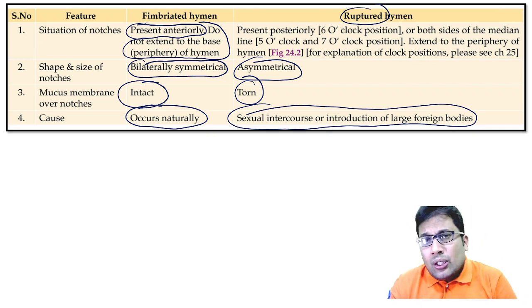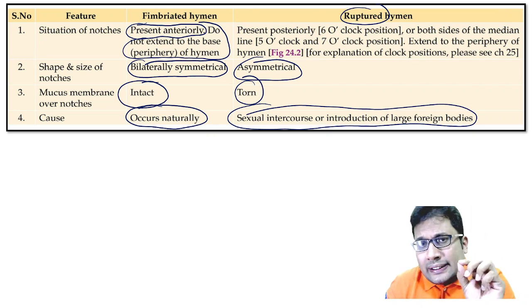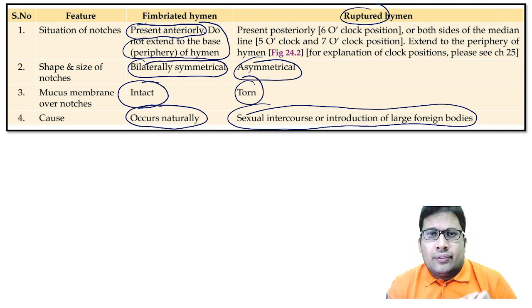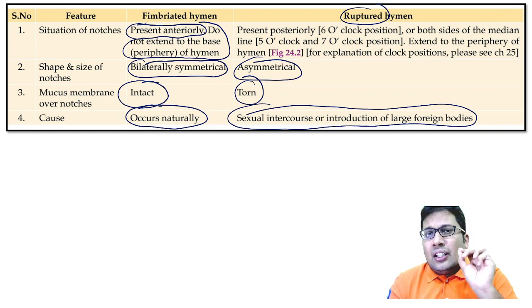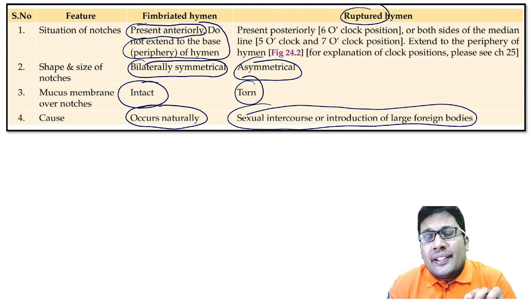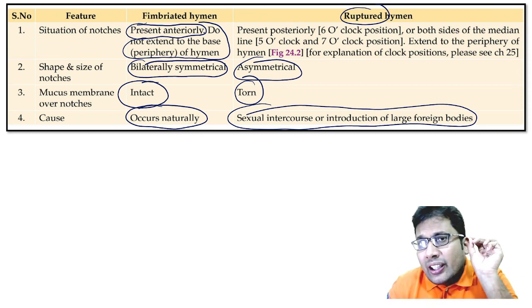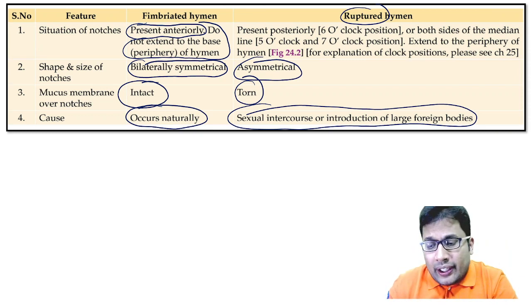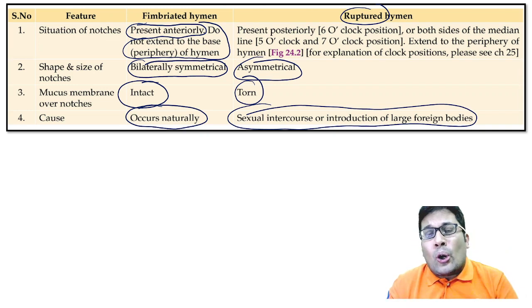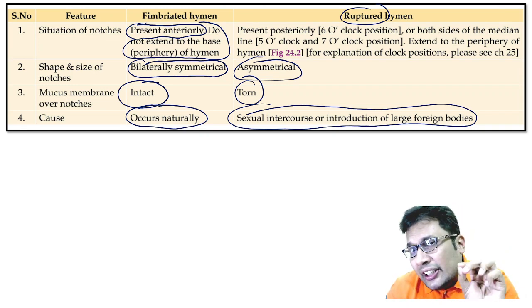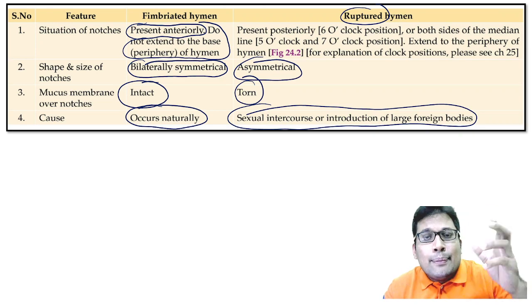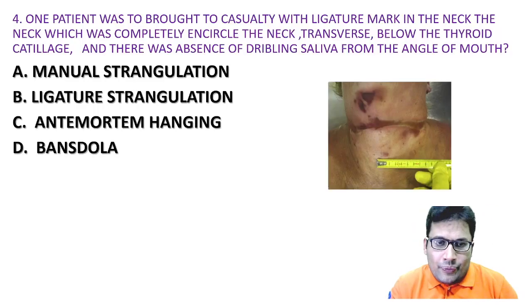The most common site of hymen tear is posterolateral. In children, hymen tear is very uncommon because it is deep-seated. GK rod (Glaister keen rod) is an instrument used to look for hymen tear.